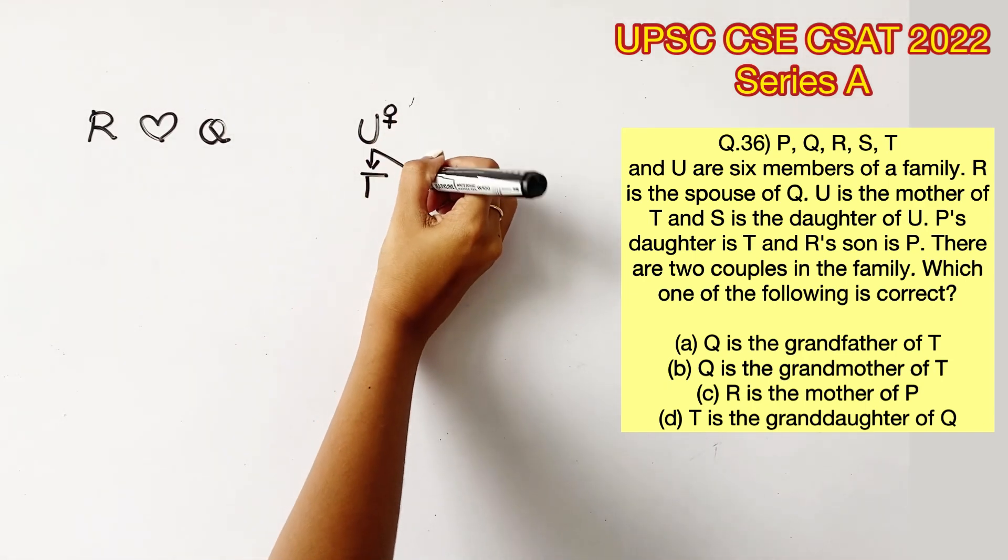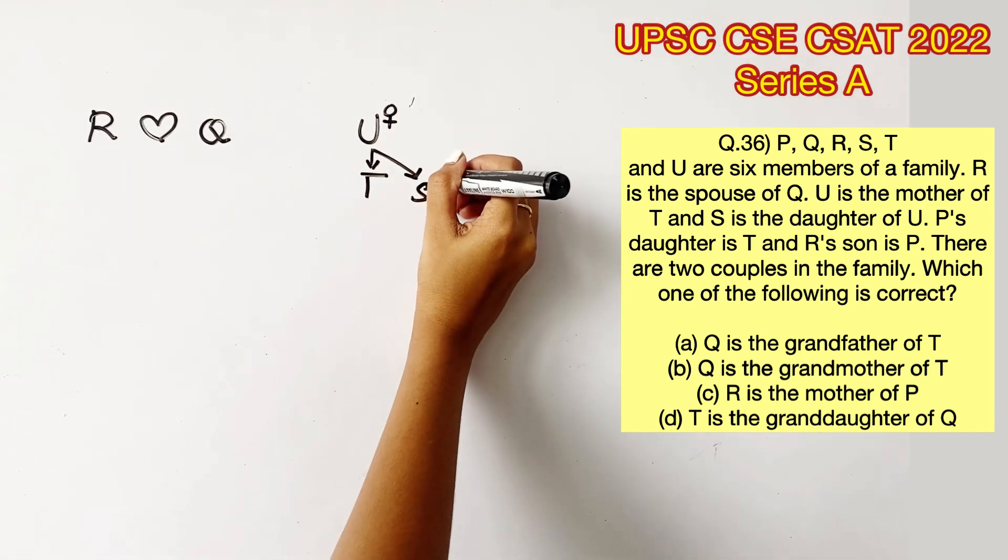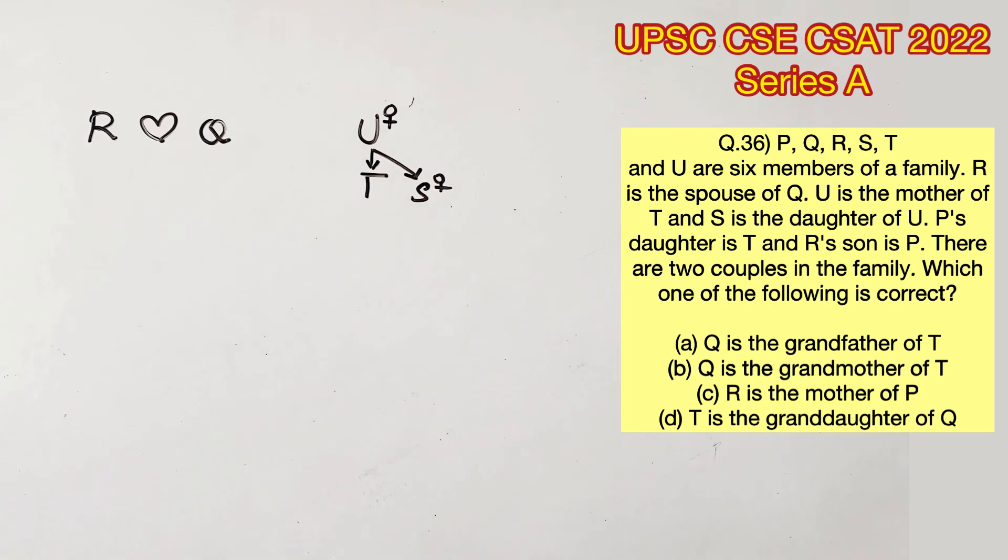Next, they are saying S is the daughter of U. So we know now S is also a female. The next statement says P's daughter is T. So now we know that P and U are the parents of T. And since U is already a female, P has to be the male.